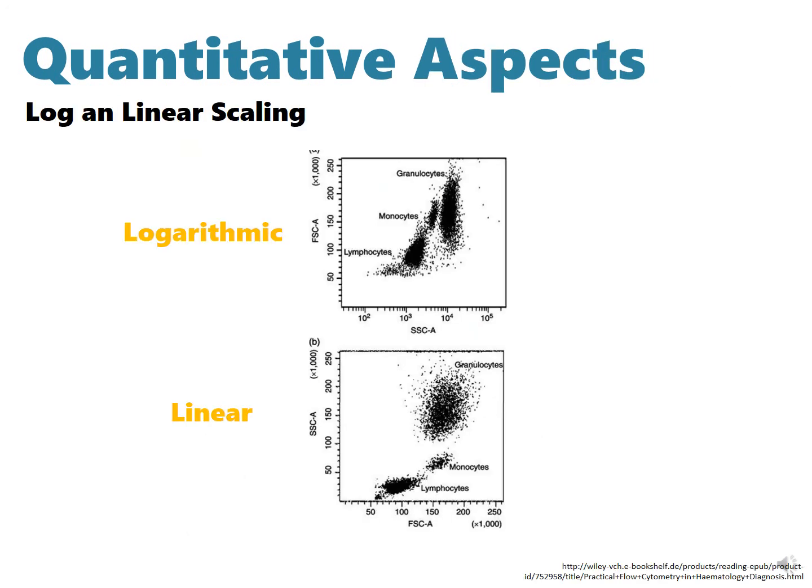Another aspect is the log versus the linear scaling. Log amplification is normally used for fluorescent studies because it expands weak signals and compresses strong signals, resulting in a distribution that is easy to display on a histogram. The linear scaling is required when very small differences in fluorescence signal must be assessed, for example, in DNA analysis. You can see the difference in the graphs clearly, as you can see the lymphocytes, monocytes, and granulocytes clearly differentiated in the linear part.